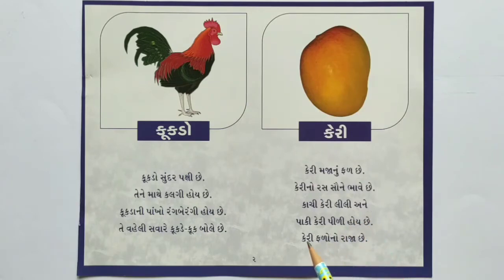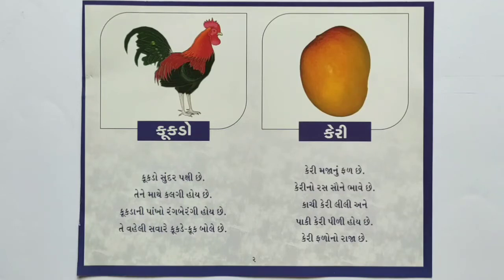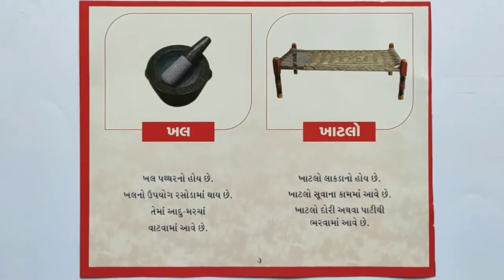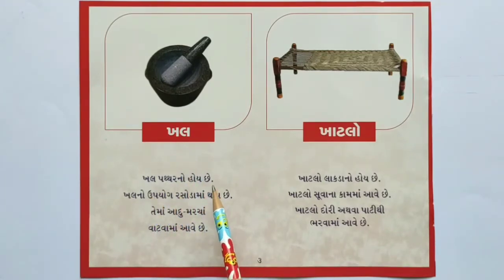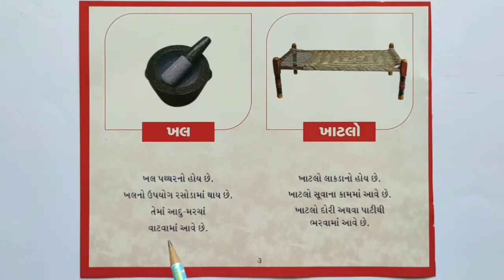કાચી કેરી લીલી અને પાકી કેરી પીળી હોય છે. કેરી ફળોનો રાજા છે. ખૂબ સરસ! ખલ - પથ્થરનો હોય છે. ખલનો ઉપ્યોગ રસોડામાં થાય છે. તેમાં આદુ-મરચા વાટવામાં આવે છે.